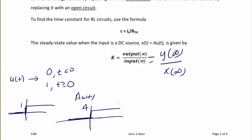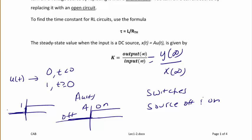If you think about this in terms of switches or turning a source on and off, what this graph represents is when the source is off and when the source turns on, where A, the amplitude, would be the value of a voltage source or a current source.